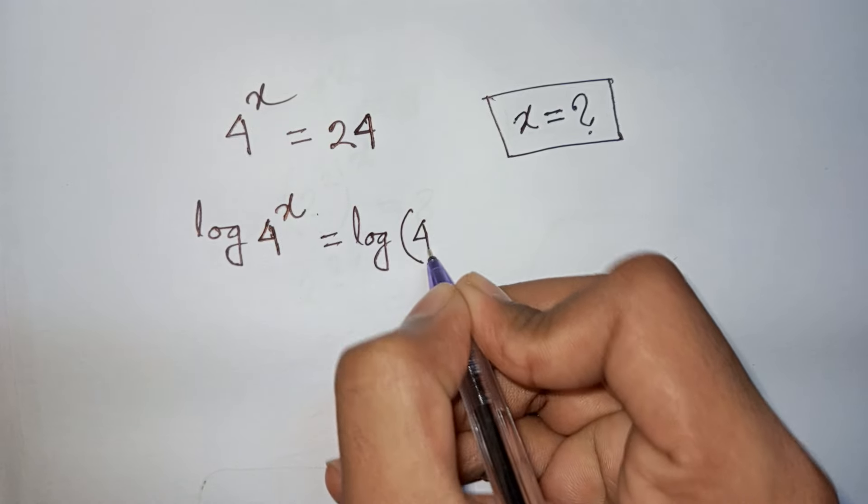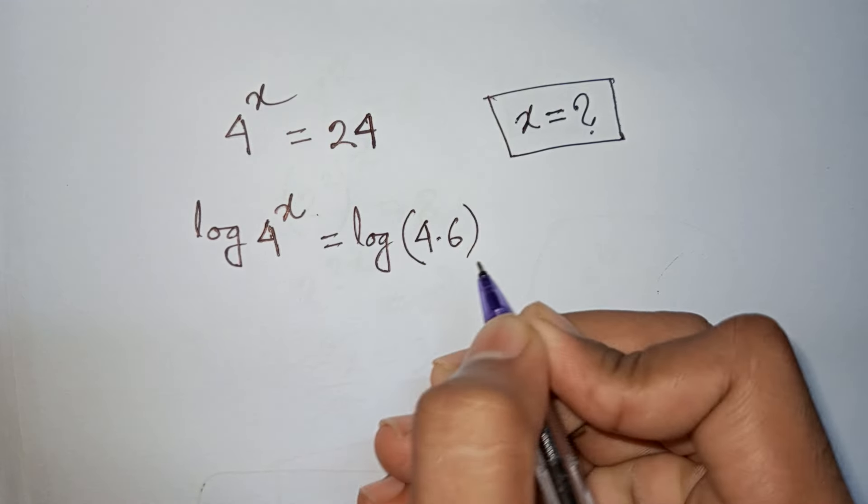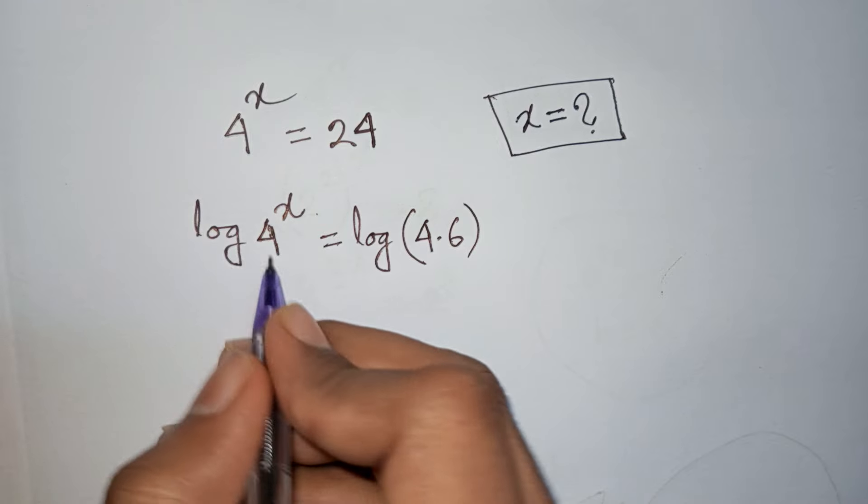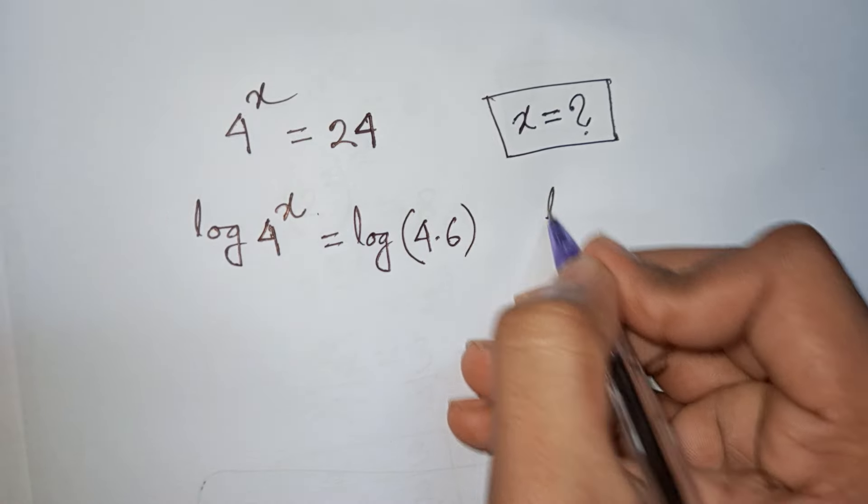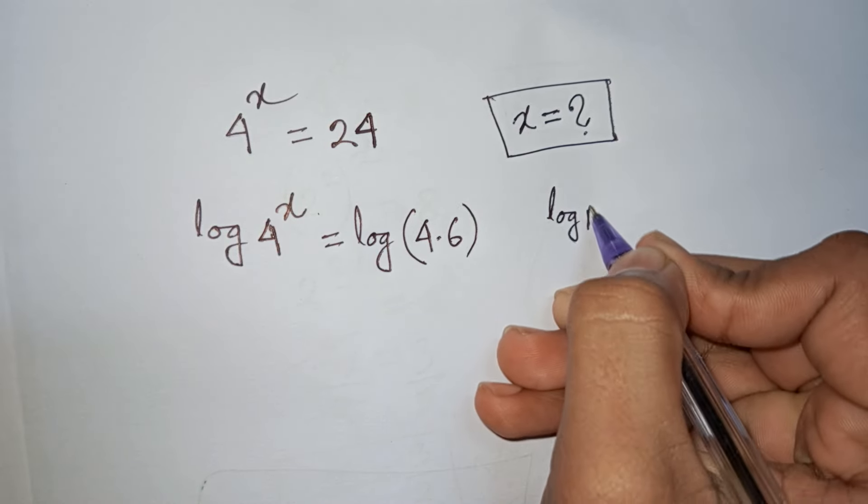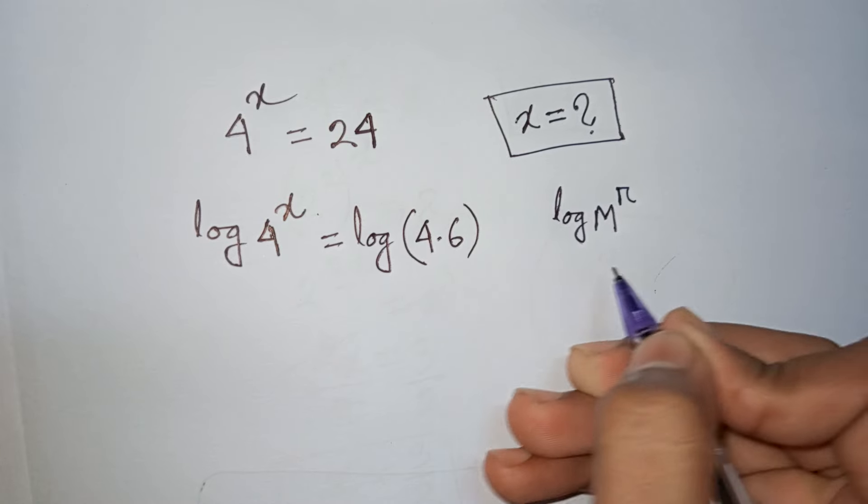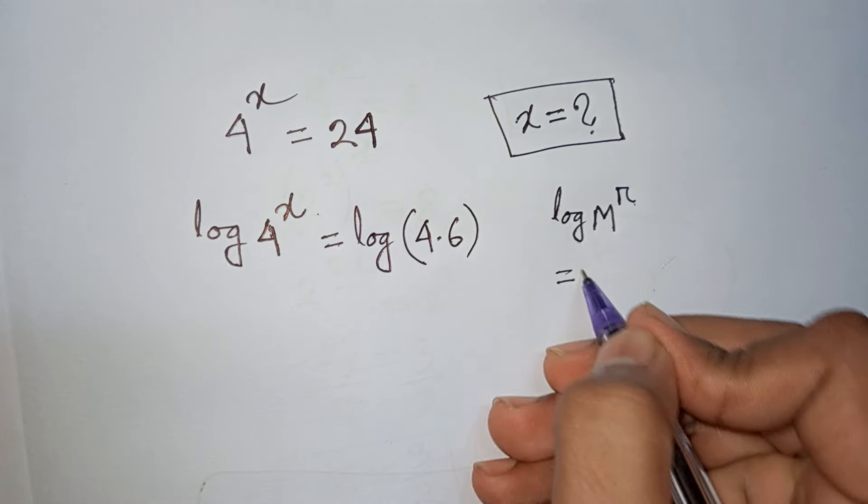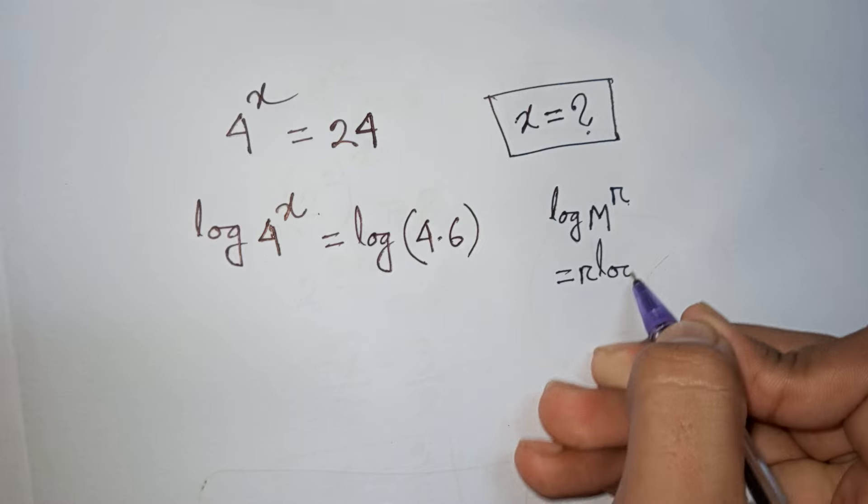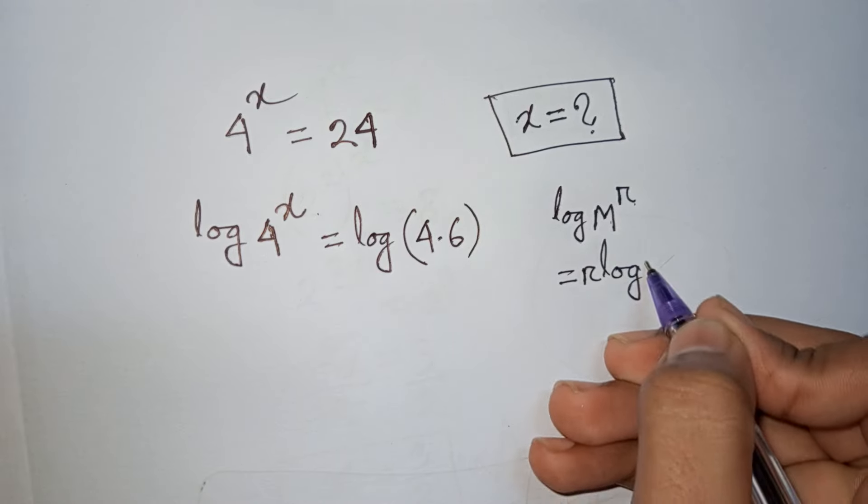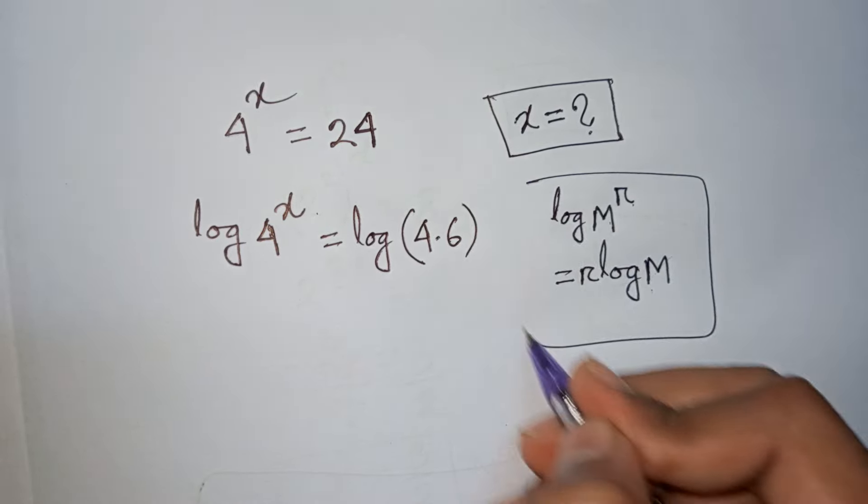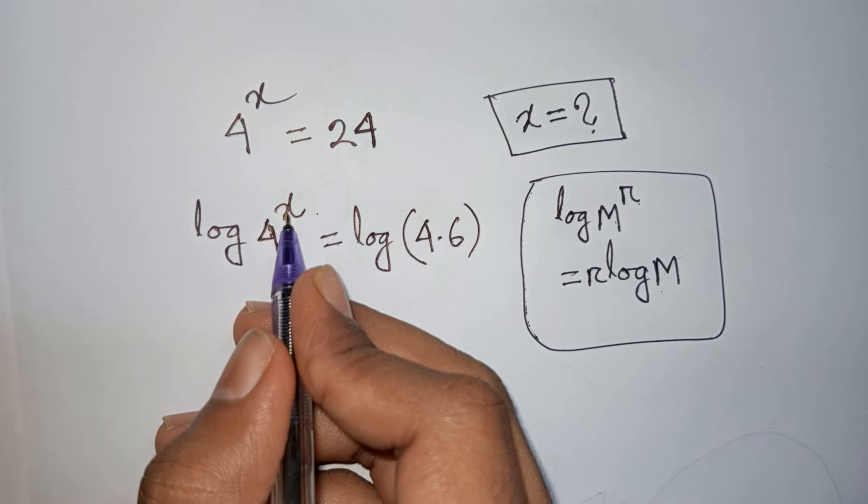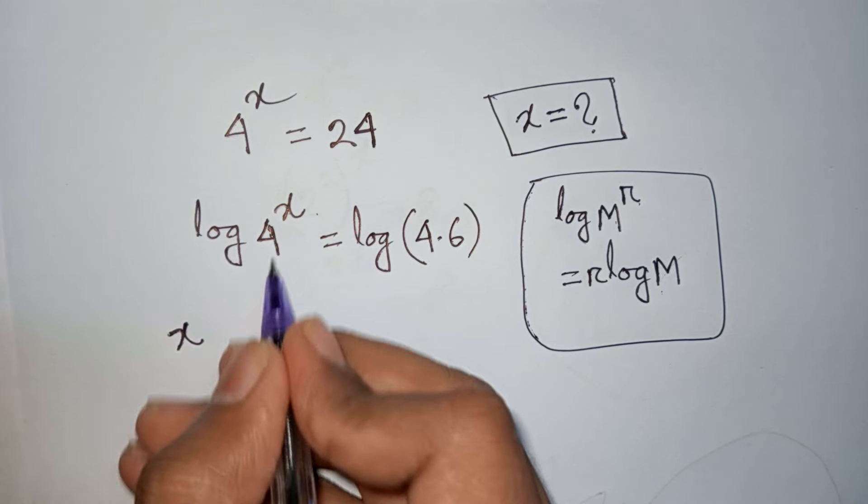24 can be written as 4 times 6. Now here you can apply the rule that log m power r is equal to r log m, so it will be x log 4.